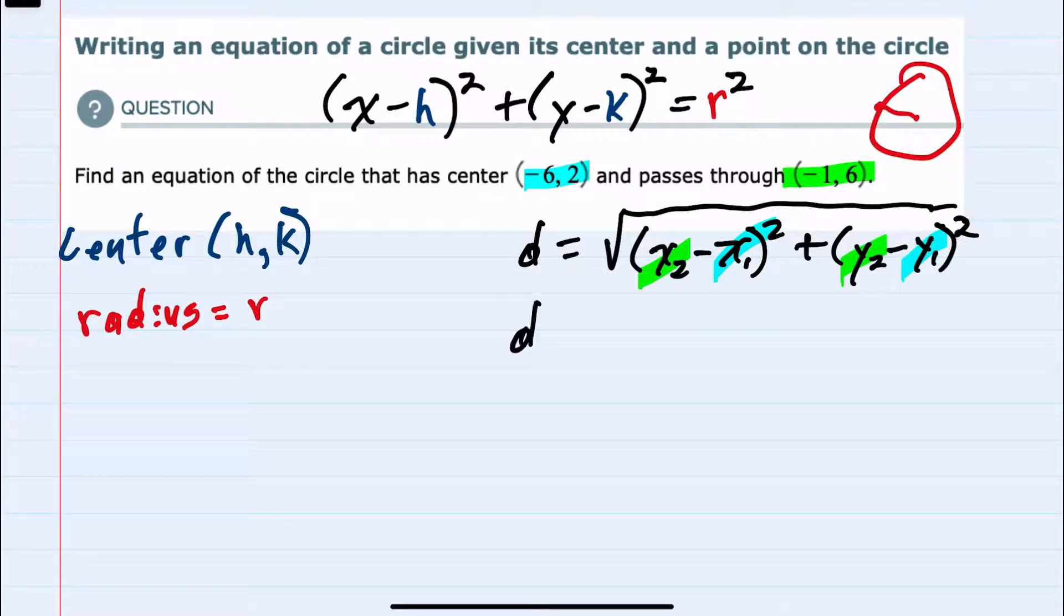And plugging in we have the distance equals the square root of [x₂ is -1 minus x₁ which is -6]² plus [y₂ is 6 minus y₁ which is 2]². Now we can simplify.